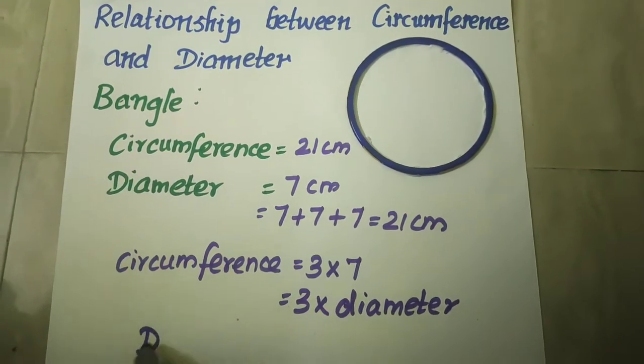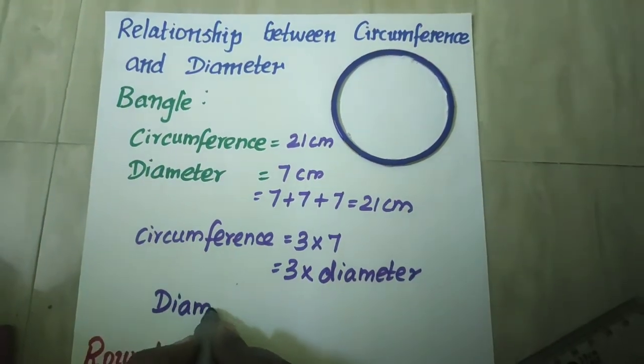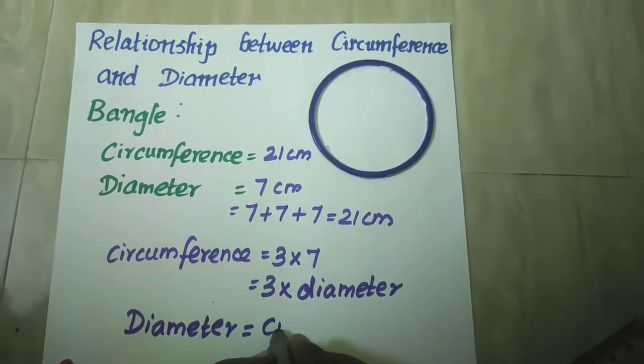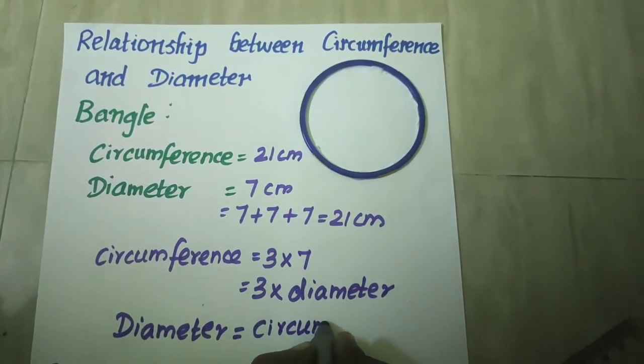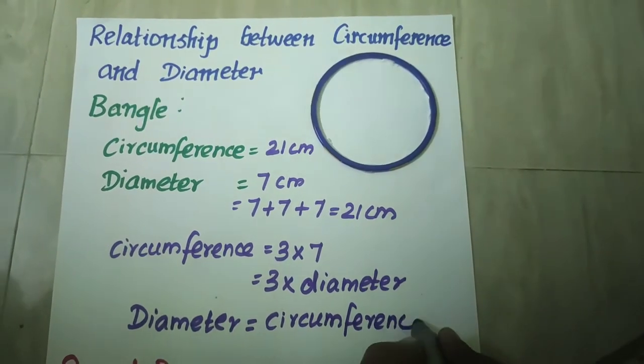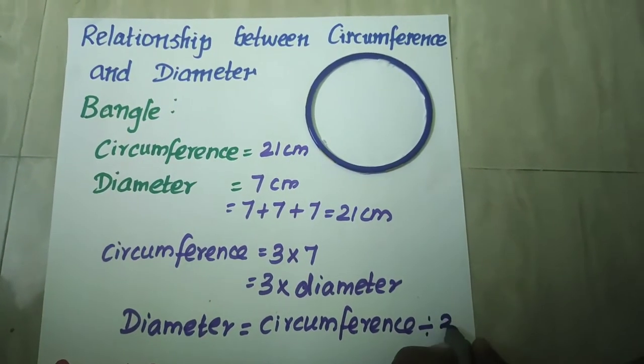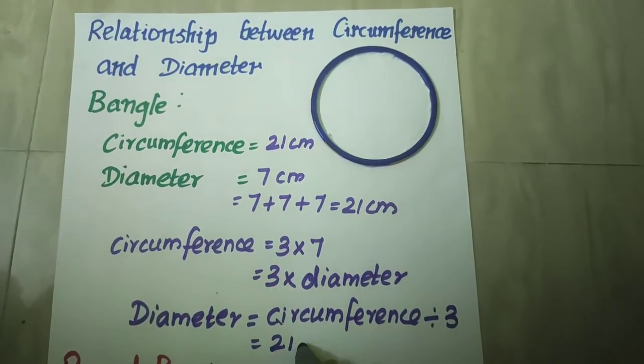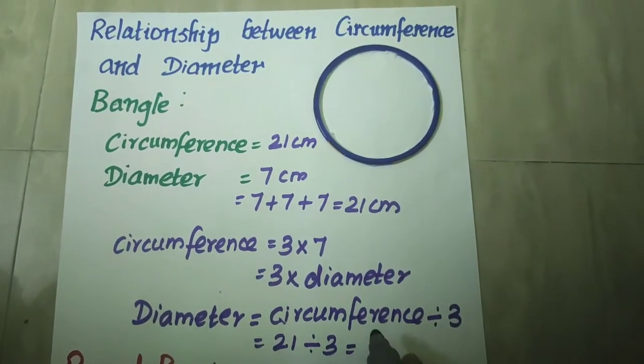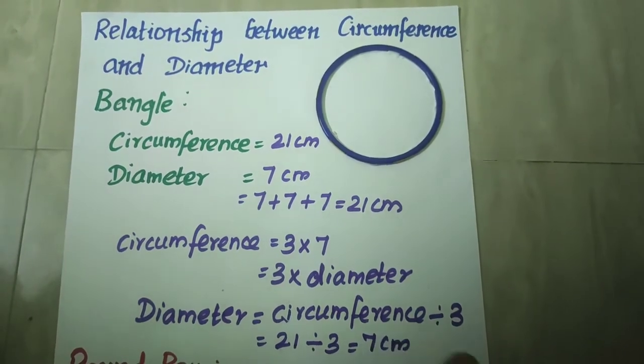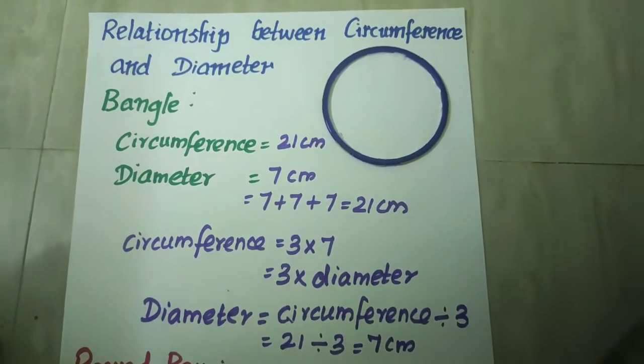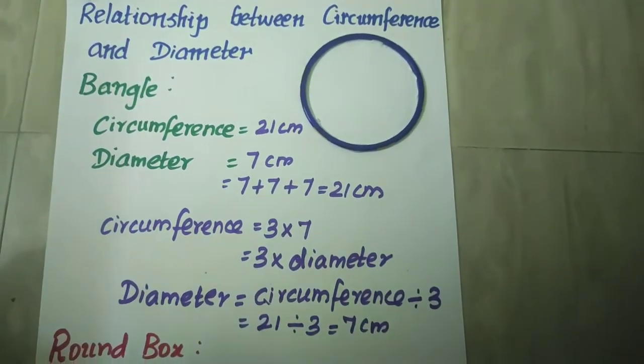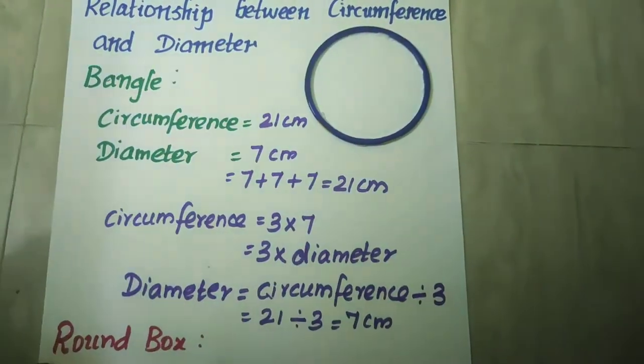Now what will be your diameter? Diameter will be circumference divided by 3. What is your circumference? 21 divided by 3. 21 divided by 3 is 7 centimeters. That is your diameter. So these two formulas help you to understand the relationship between circumference and diameter.